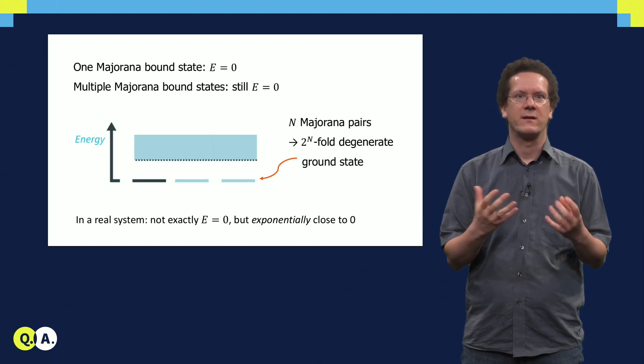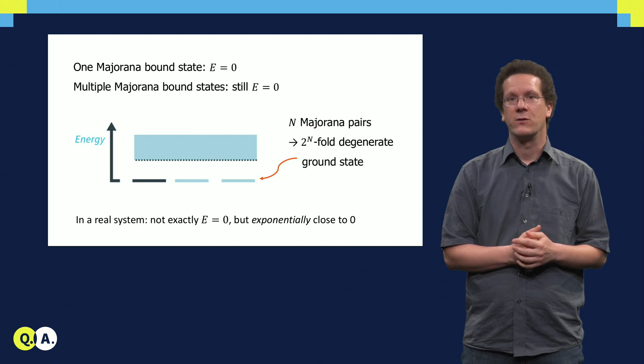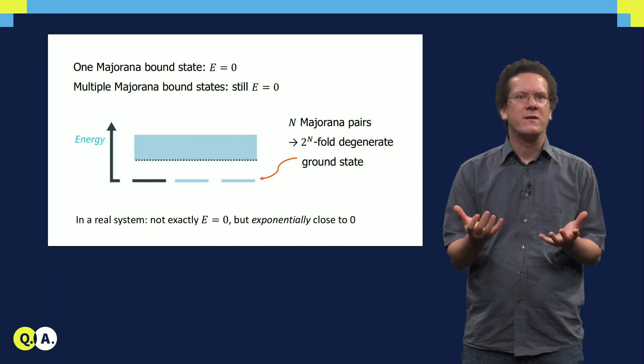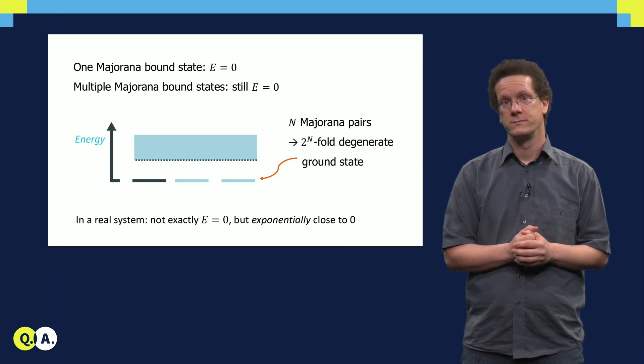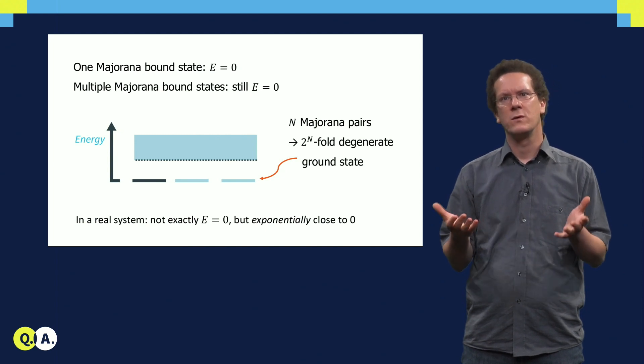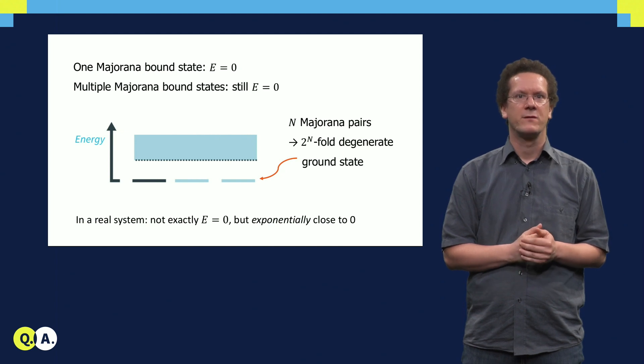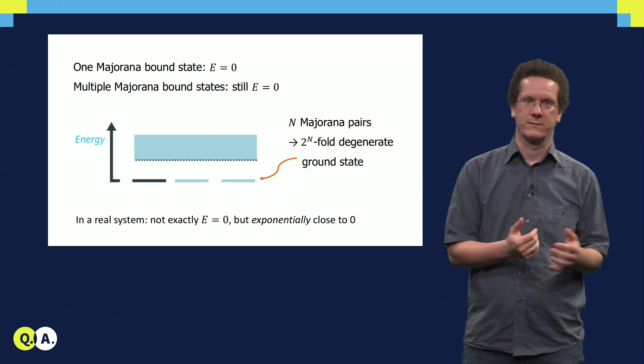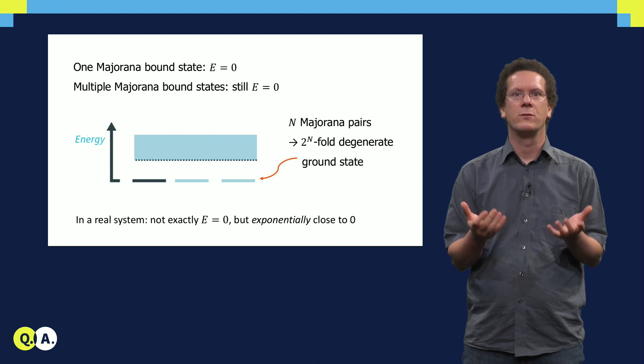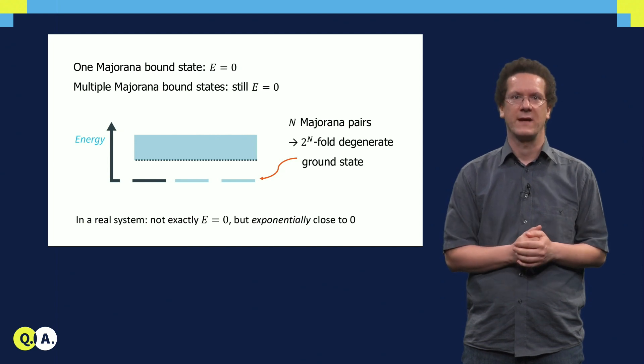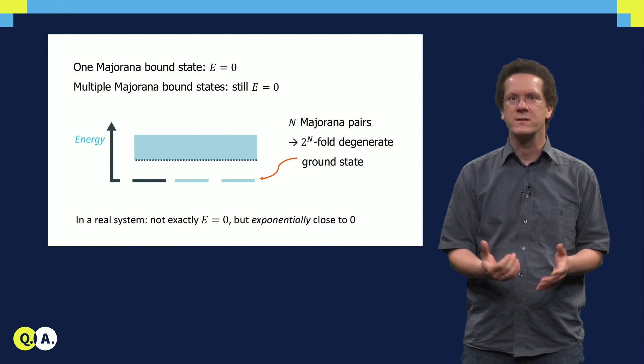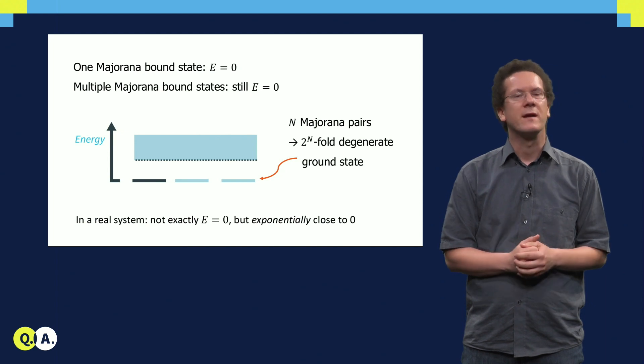Now, there is actually an interesting aspect about Majorana bound states being at zero energy. You can have multiple Majorana pairs, and the states you can make out of these Majorana pairs all have zero energy too. So with n Majorana bound state pairs, you actually have a 2 to the n-fold degenerate ground state, because each pair can be occupied or not occupied. In a topological superconductor we thus generally have a gap, and at zero energy a 2 to the n-fold degenerate ground state. This will be important in a later stage, as this allows for topologically protected operations on Majorana bound states. But this will be covered in a separate lecture.